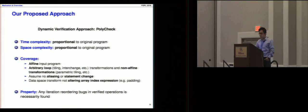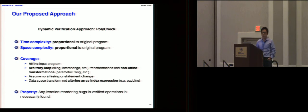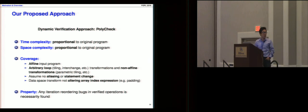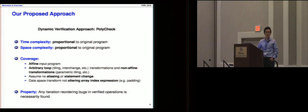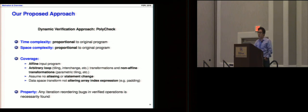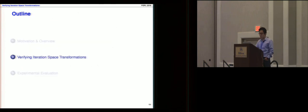Some features of our proposed approach: the time complexity is proportional to the original transformed program, and the same applies to space complexity. The key strength of our approach is that it takes an affine program as input and handles arbitrary loop and non-affine transformations. We assume no array aliasing, statement changes, or altering of re-index expressions. Any violation of iteration reordering in the verified operations will be detected.